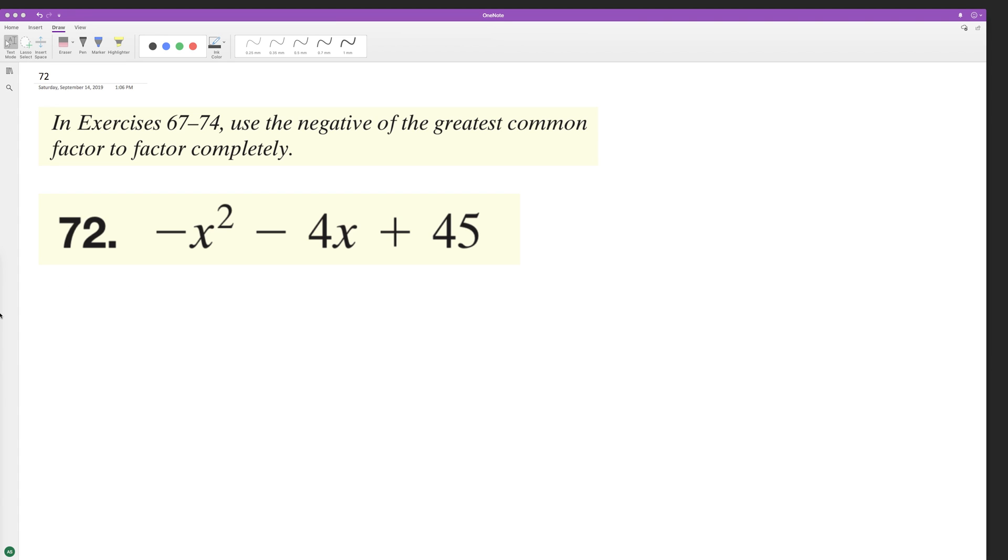Factor this trinomial completely. Factor out a negative one, then we get x squared plus 4x minus 45. So factor this further: we'll get x plus 9 and then x minus 5. So we can test this out.